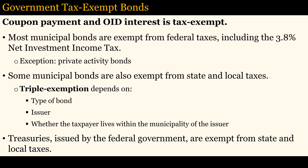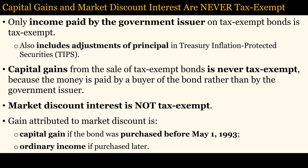Some municipal bonds are exempt from federal taxes, including the 3.8% net investment income tax. Some municipal bonds are also exempt from state and local taxes. Triple exemption depends on the type of bond issuer and whether the taxpayer lives within the municipality of the issuer. Treasuries issued by the federal government are exempt from state and local taxes. Only income paid by the government issuer on tax-exempt bonds is tax-exempt, including adjustments of principal for treasury inflation-protected securities. Capital gains from the sale of tax-exempt bonds is never tax-exempt because the money is paid by a buyer of the bond rather than by the government issuer. For a similar reason, market discount interest is not paid by the issuer but results from market conditions, so it is not tax-exempt.